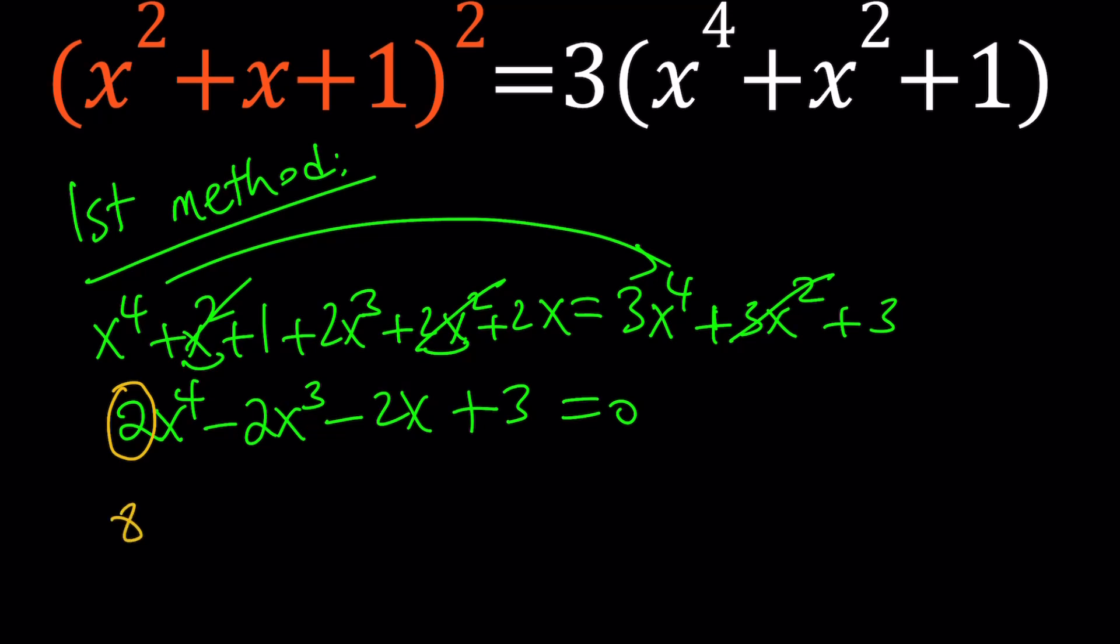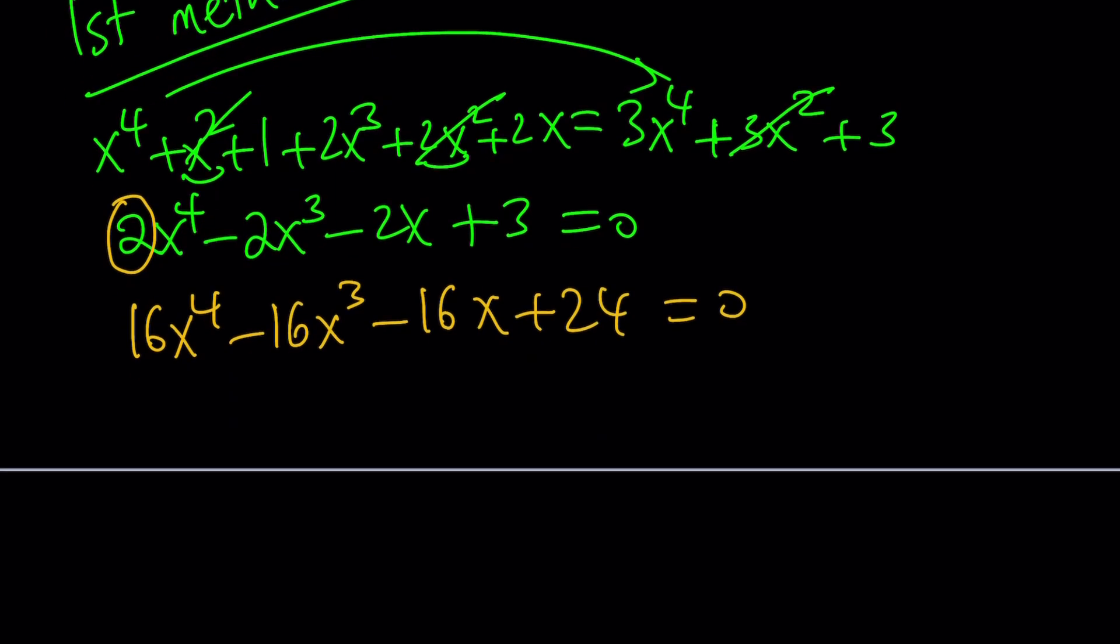8 times this is going to give me 16x to the 4th minus 16x cubed minus 16x plus 24 equals 0. Think about 16x to the 4th. We can write it as 2x quantity to the 4th power. And this could be written as 2x to the 3rd, but that will be 8x cubed, so we need a 2 there. We can also multiply 2x by 8, and finally plus 24. And hopefully you got the idea.